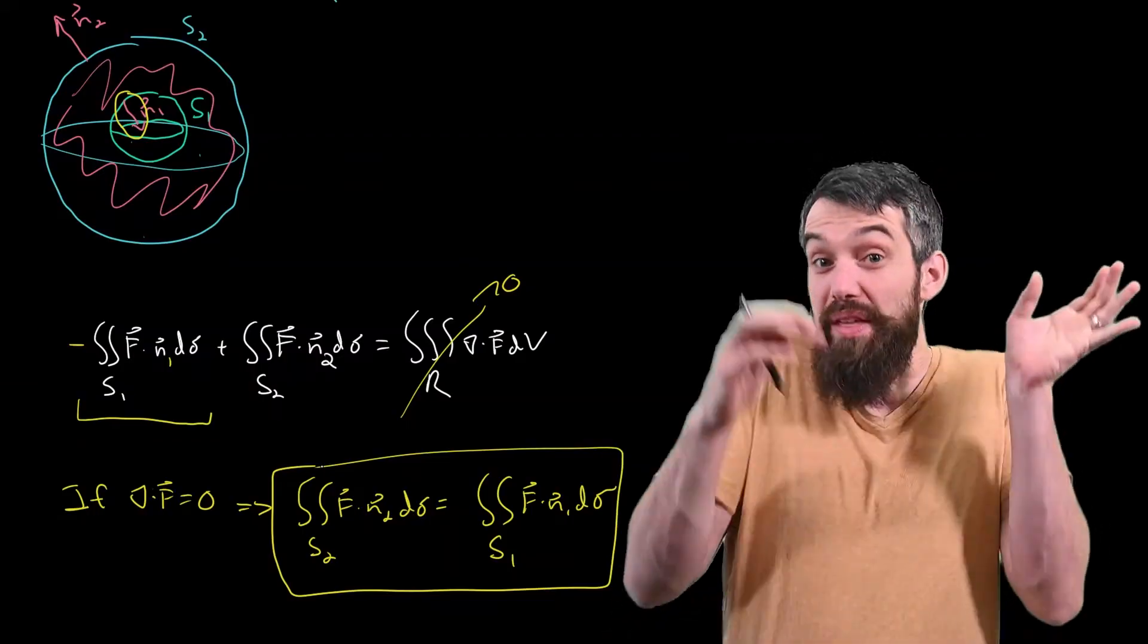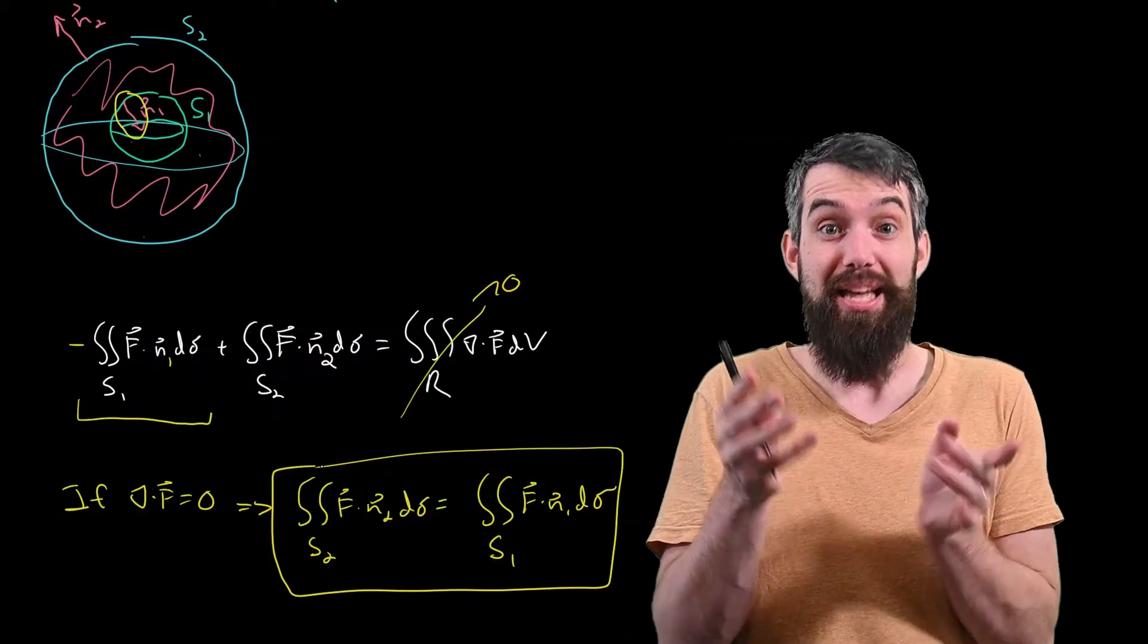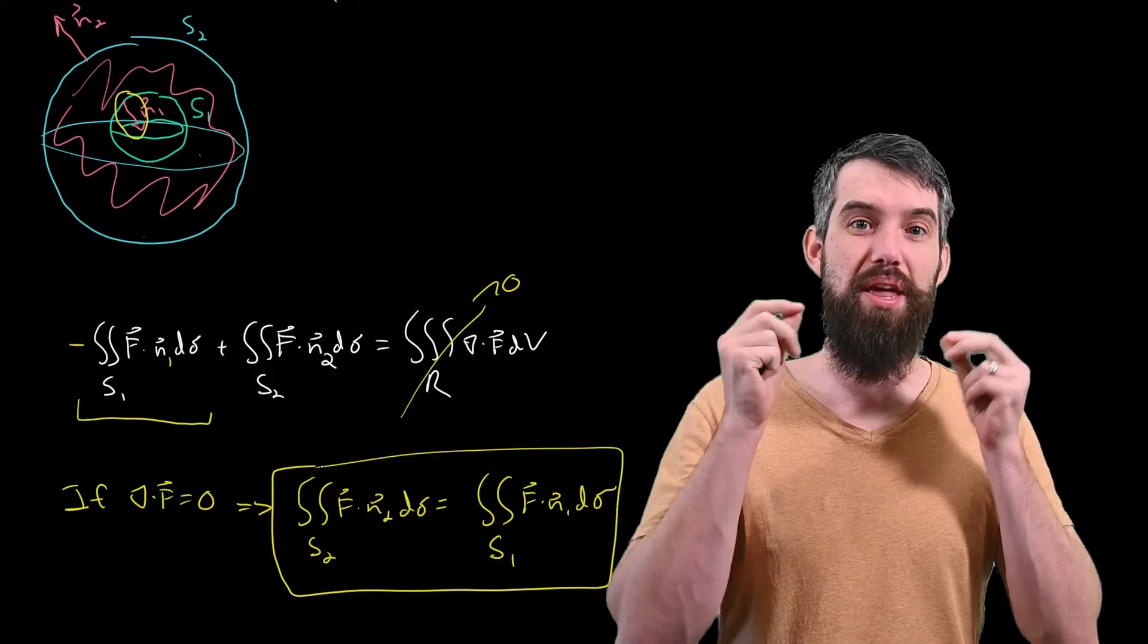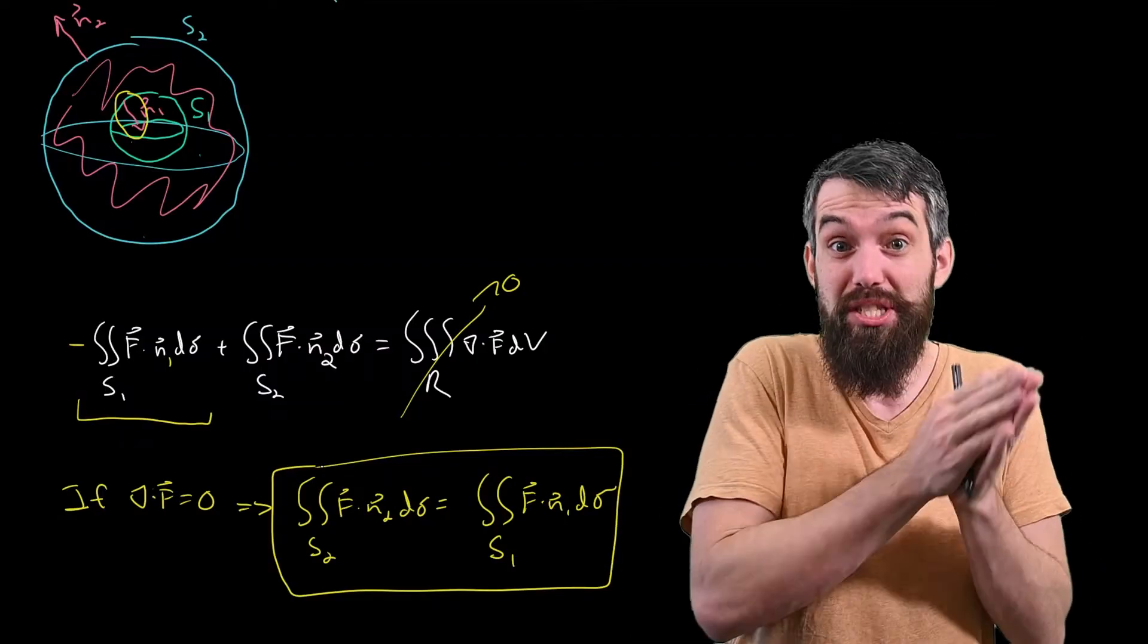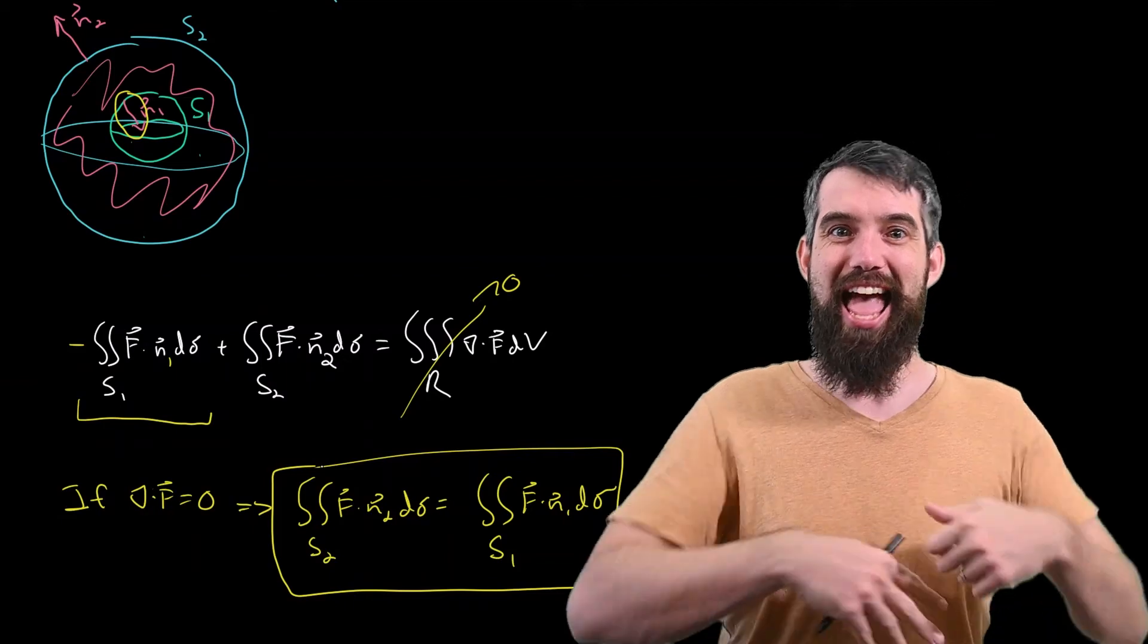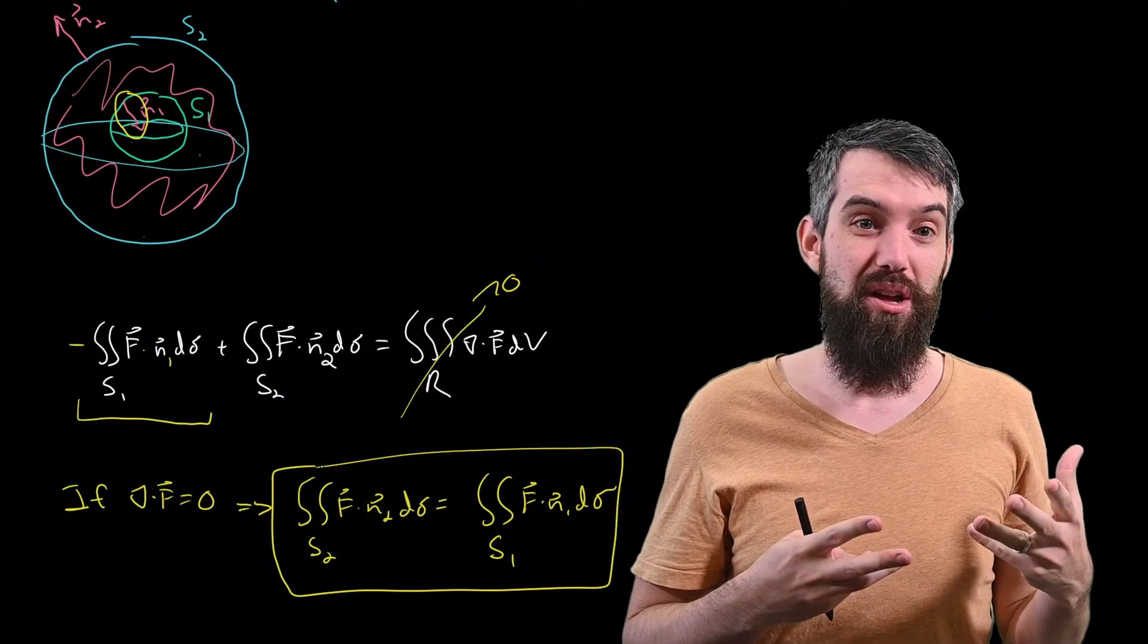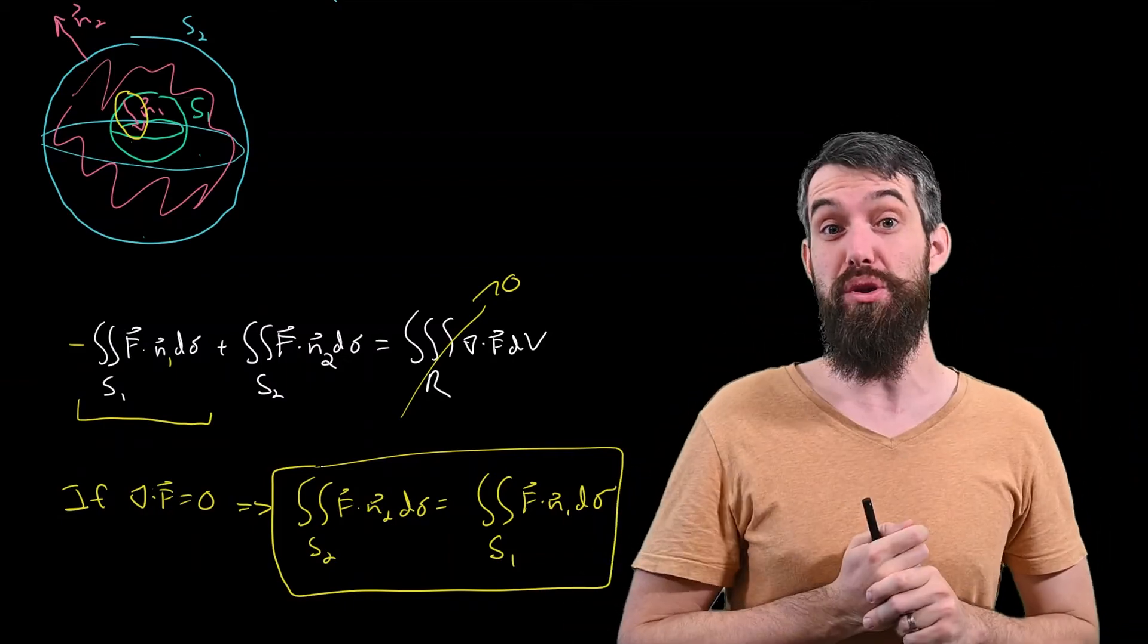That is, the flux over these two completely different surfaces is exactly the same when the divergence is zero. So this tells us some really nice things. If the divergence is zero, then you in fact can replace any surface that you might have with some surface that's much easier for you to compute.